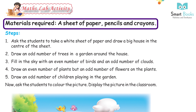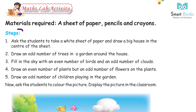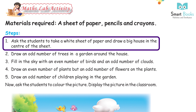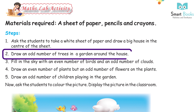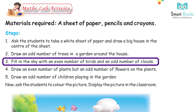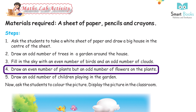Math lab activity. Materials required: a sheet of paper, pencils, and crayons. Steps: one — ask the student to take a white sheet of paper and draw a big house in the center of the sheet. Two — draw an odd number of trees in a garden around the house.